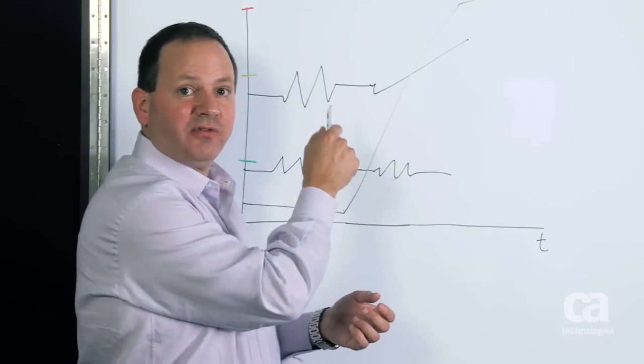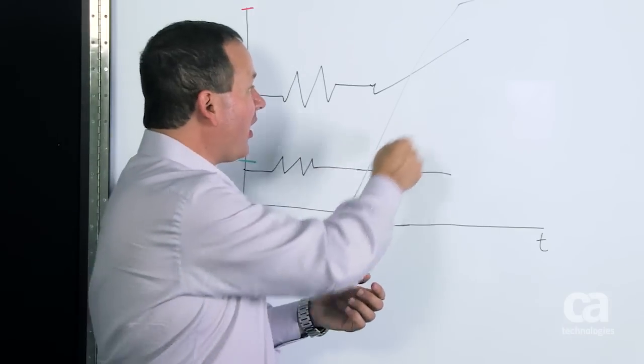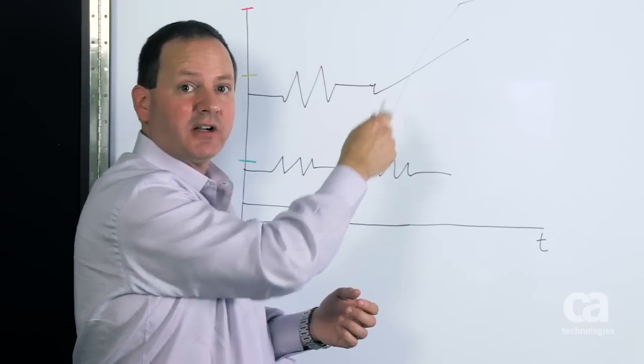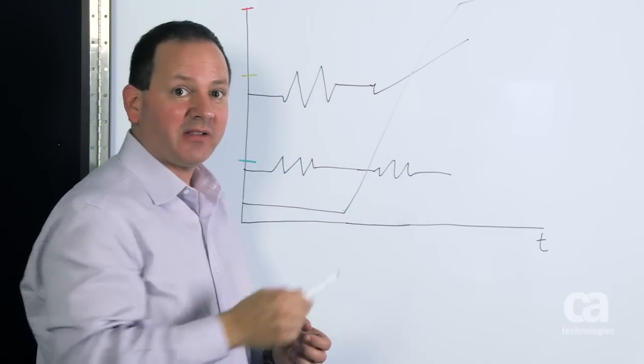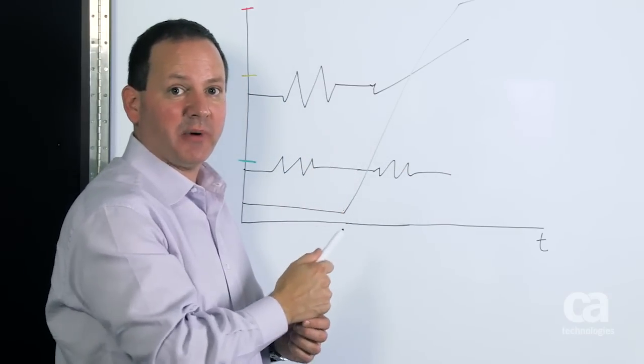We've got to have an integrated, fully automatic solution that is automatically discovering the relationship between these various metrics and identifying them for you automatically. That's what application behavior analytics is all about.